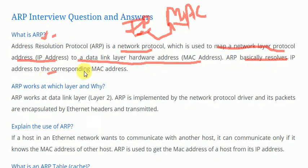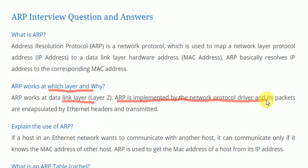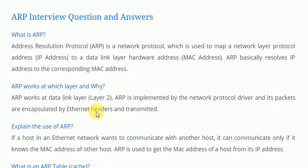Our next question is: at which layer does ARP work, and why? ARP works at the Data Link Layer, which is Layer 2. ARP is implemented by the network protocol driver and its packets are encapsulated by Ethernet headers and transmitted. It works at the Data Link Layer because it is related to MAC addresses.